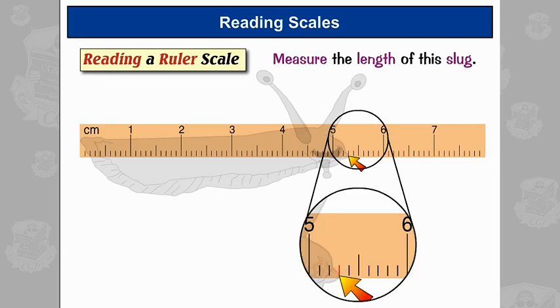If we zoom in, we can see that the nearest numbered notches are five centimeters and six centimeters. There are 10 little notches in this one centimeter interval, so each notch must be worth one millimeter or 0.1 centimeters.